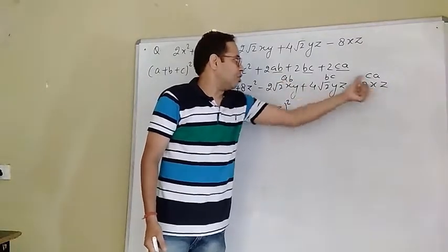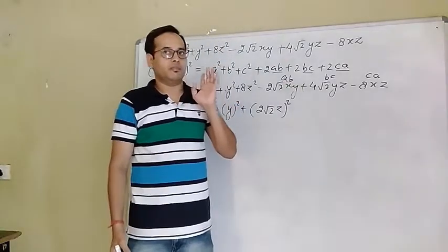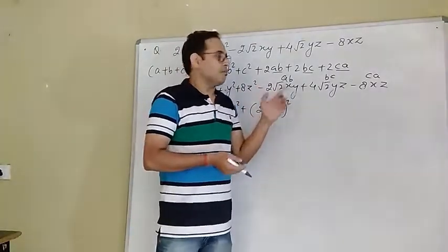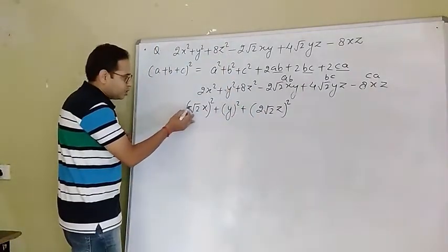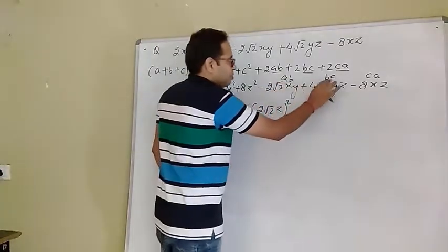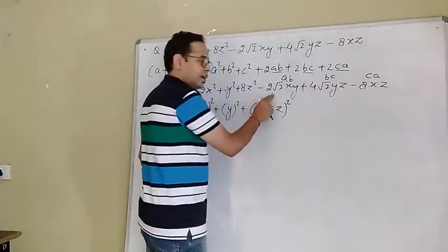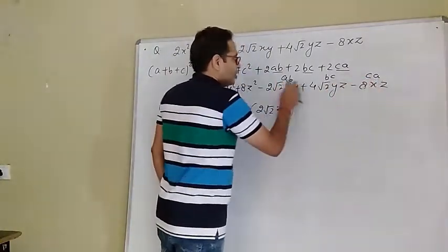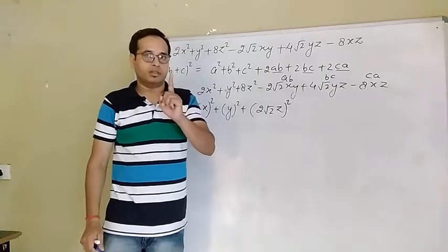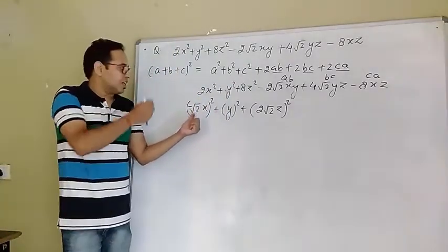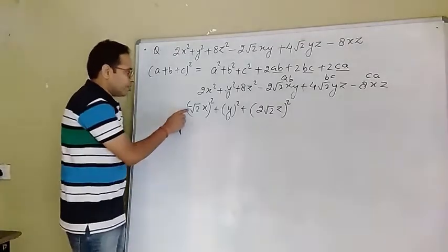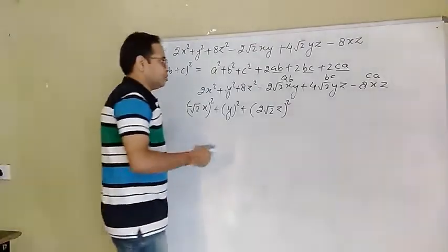The negative sign appears in the terms involving a — that is, the ab and ca terms. Since a is common in both negative expressions, the first term must be negative. Therefore we take a = -√2 x. Squaring gives (-√2 x)² = 2x², which is positive — that is why the first term a = -√2 x (as a whole square). This makes the negative signs in the cross terms consistent.